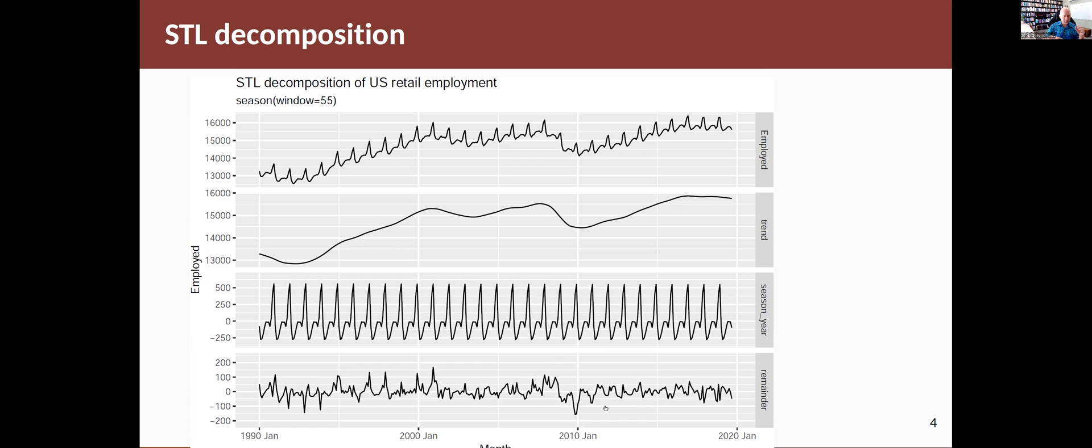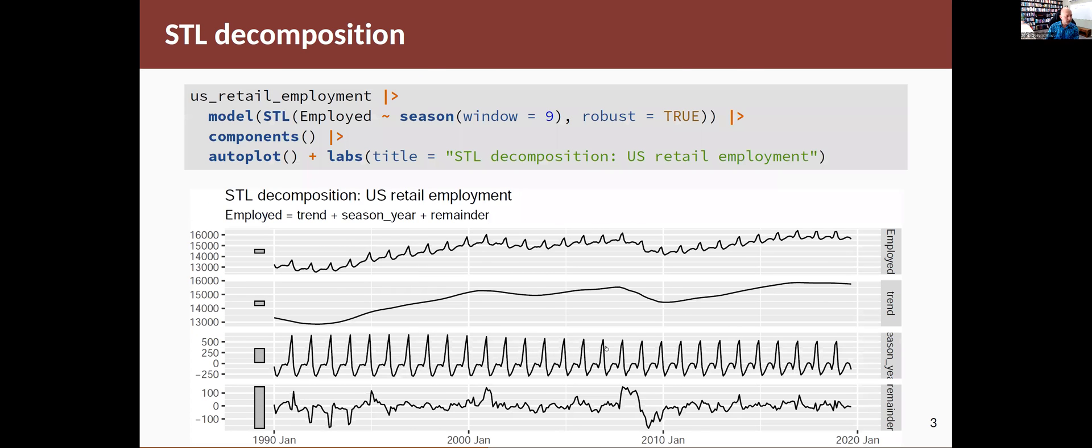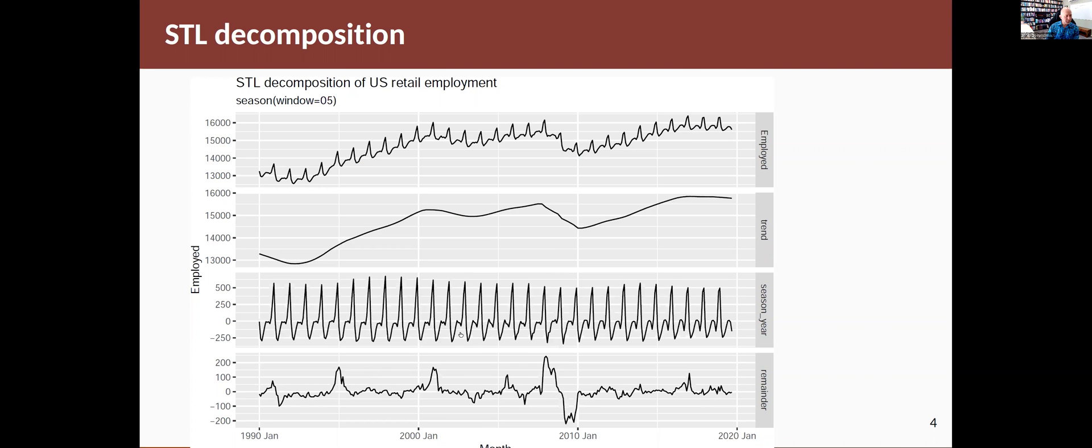The remainder starts off jumping around all over the place because it's trying to deal with the fact that some of the noise is being picked up in the seasonal pattern when you have a seasonal window too small. Let's go back and do that again. So you see when the window is really small, the remainder is also a bit of a mess.